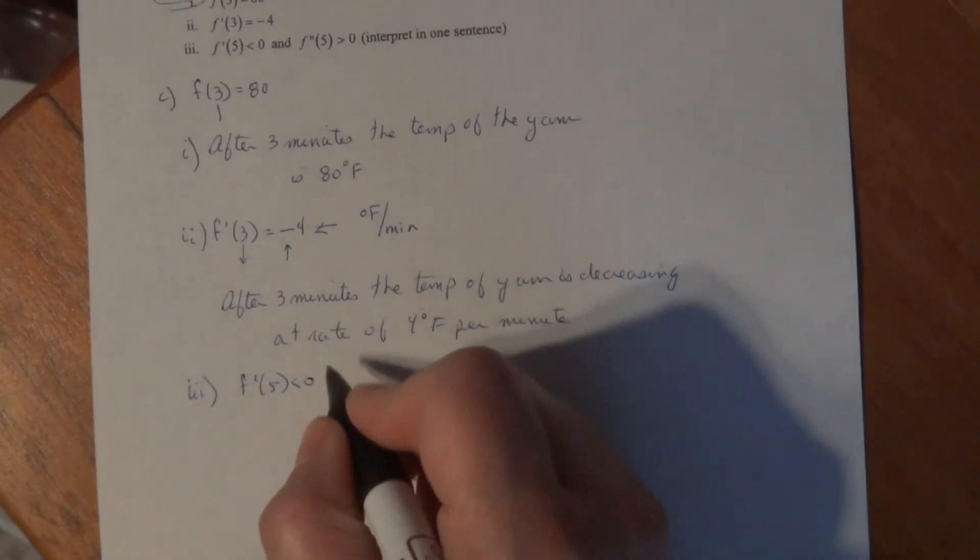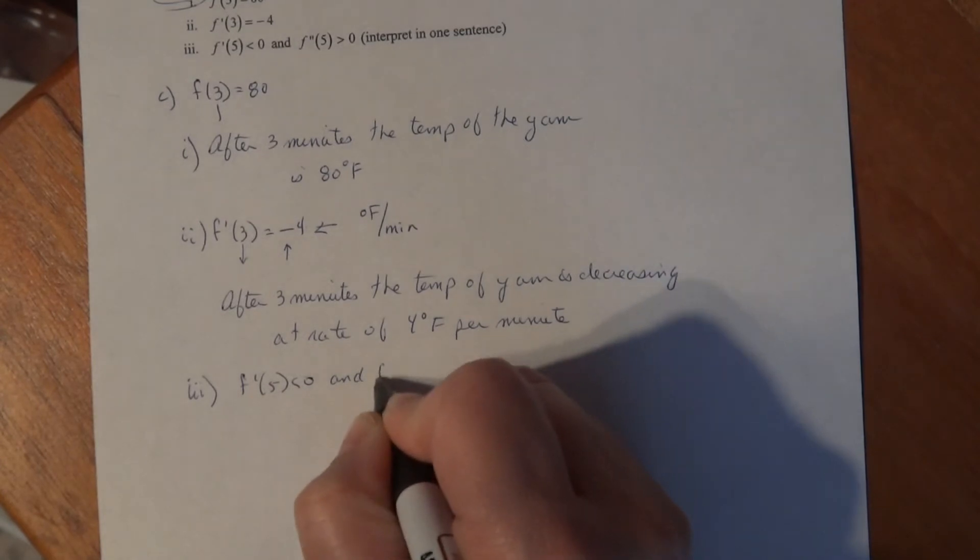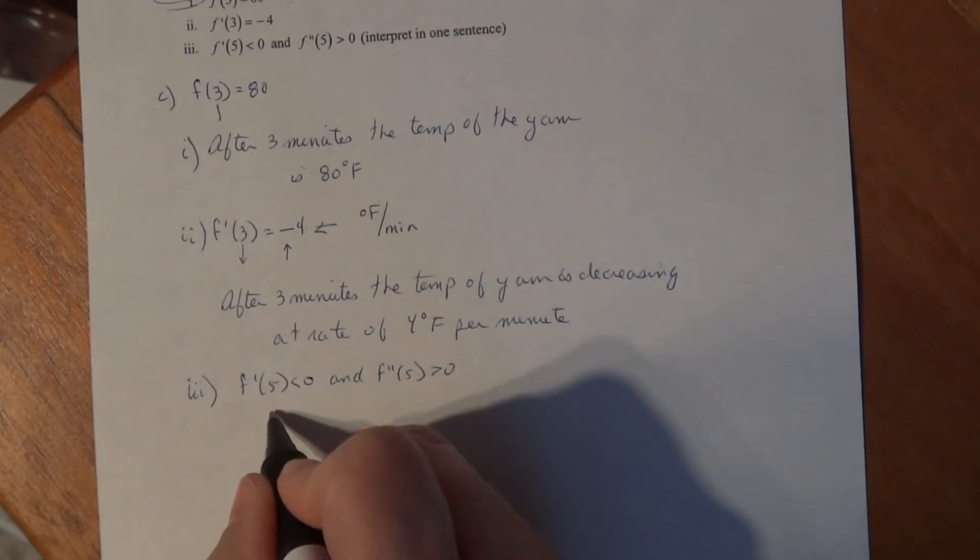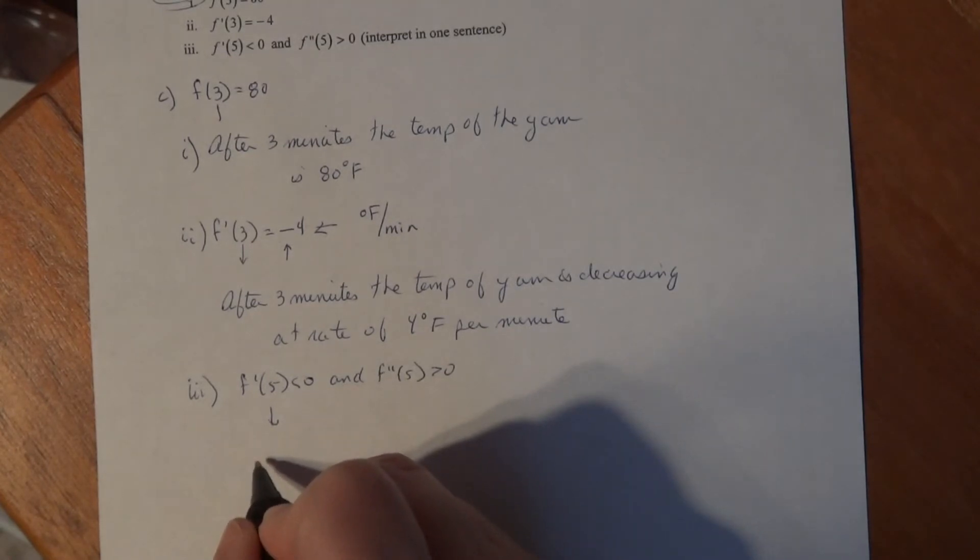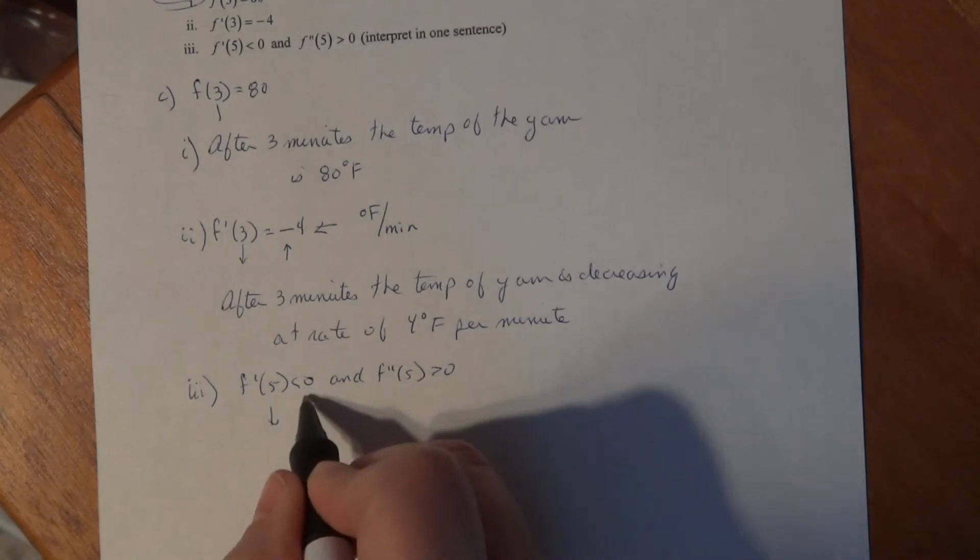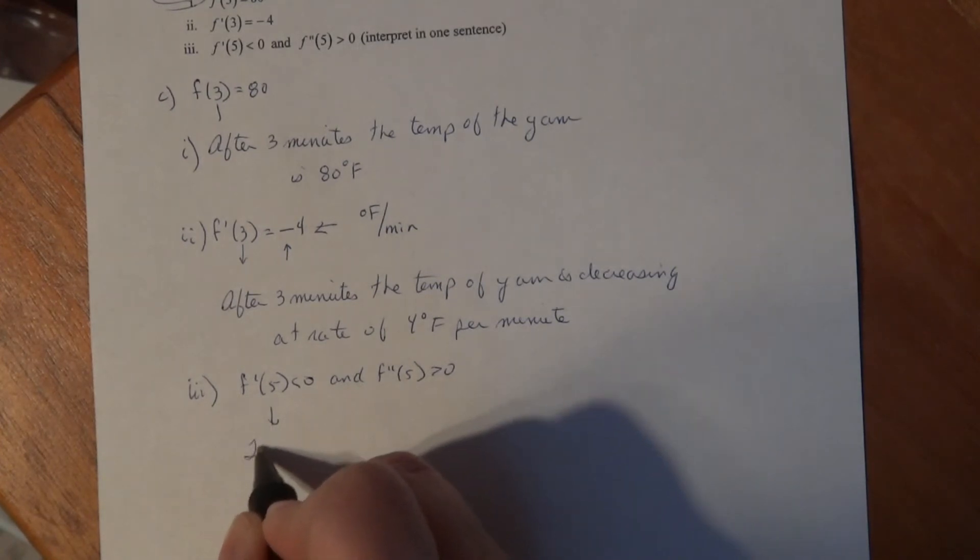F prime of 5 is less than 0, and F double prime of 5 is greater than 0. Here the input is at 5, and the fact that F prime is less than 0 means the temperature is decreasing.